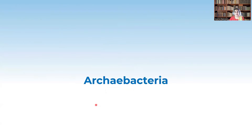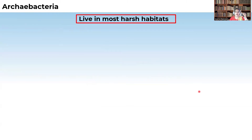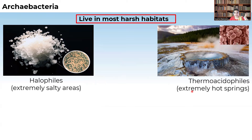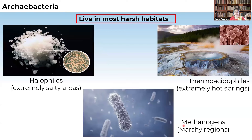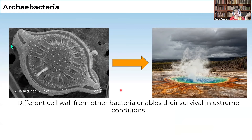Let us discuss archaebacteria. They live in the most harsh habitats — extreme hot and extreme cold conditions. They are mainly halophytes, meaning they live in highly saline waters. Some members of archaebacteria are thermoacidophiles, meaning they live in extreme hot springs. Some even act as methanogens and live in marshy regions. The cell wall structure of archaebacteria helps them survive in these extreme conditions — it is different from that of other bacteria.